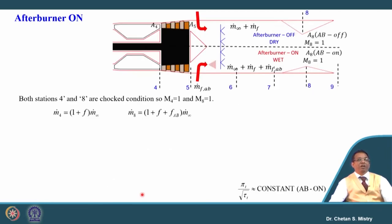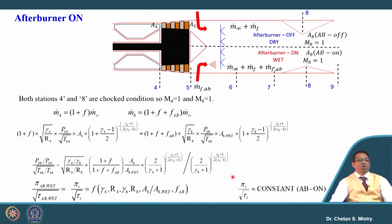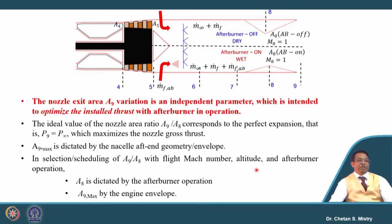Now let us look at when the afterburner is under on condition. Under that condition, the formulation at the throat changes: it is (1+f+f_ab)ṁ_∞. Applying this equation similarly, the ratio remains constant under that condition as well. So under afterburner on and off conditions, the mass flow rate at the entry of the nozzle varies. The modulation in terms of area change is based on how much fuel is being added in the afterburner.